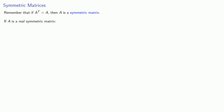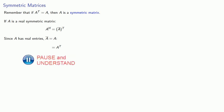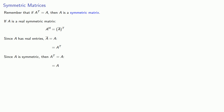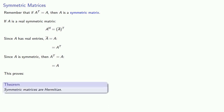Let's add one more idea. Remember that if A transpose equals A, then A is a symmetric matrix. If A is a real symmetric matrix — symmetric with real entries only — then A Hermitian, by definition, is the transpose of the conjugate. Since A has real entries, the matrix of conjugates is A itself, so A Hermitian equals the transpose of A. Since A is symmetric, A transpose equals A. Joining beginning to end, A Hermitian equals A, which is the definition of a Hermitian matrix. So symmetric matrices are Hermitian.